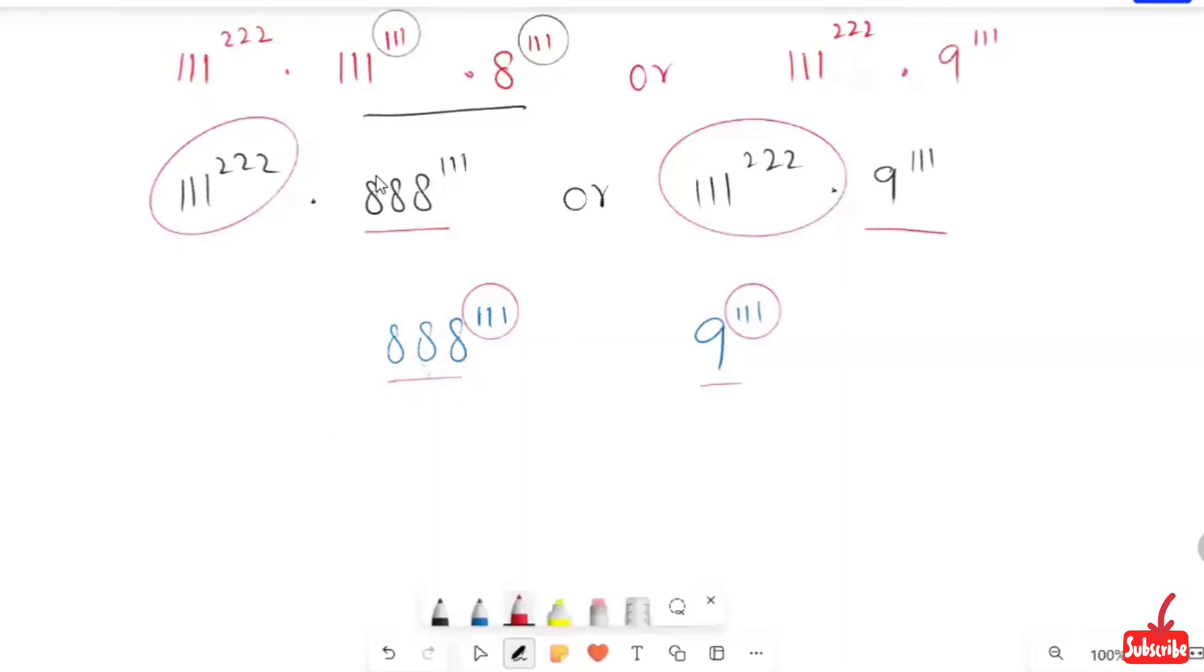So here the base is bigger and here is smaller. So we can say that 888 raised to power 111 is greater than 9 raised to power 111.